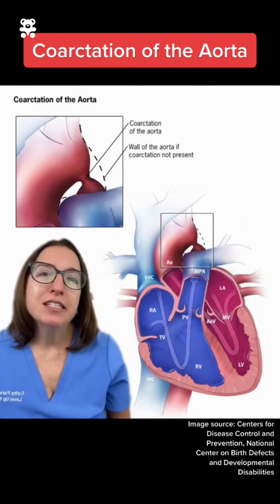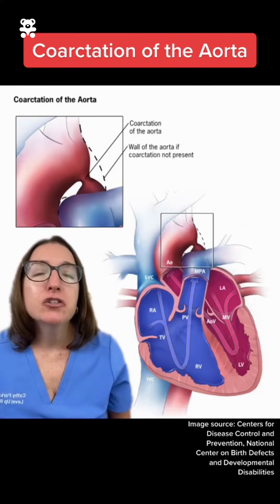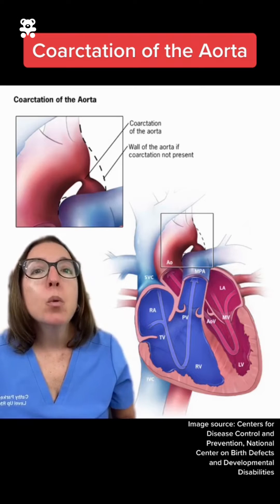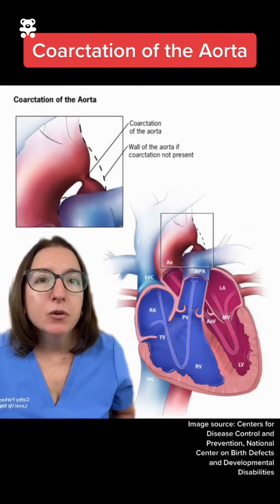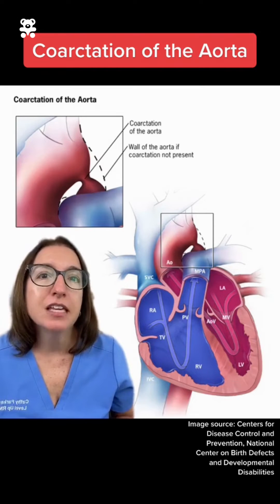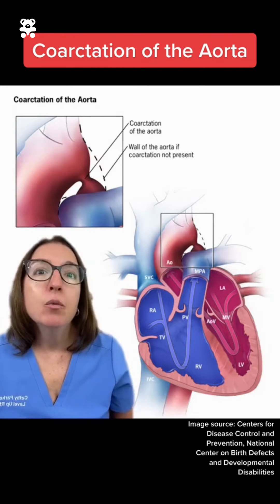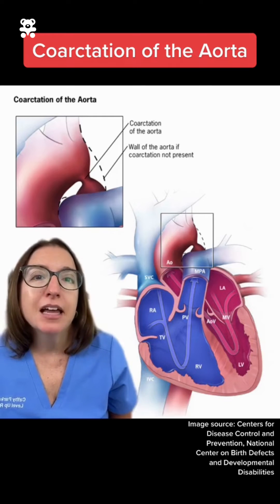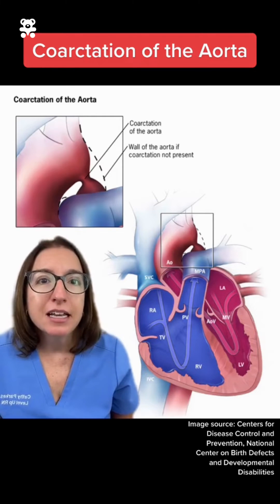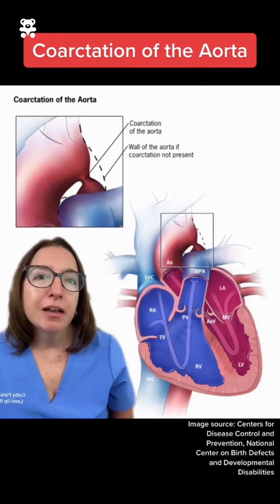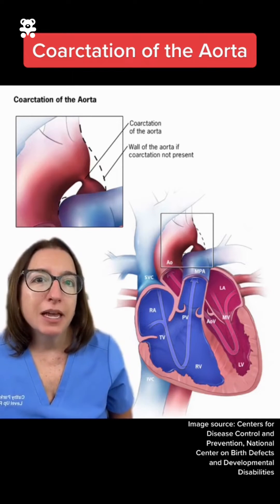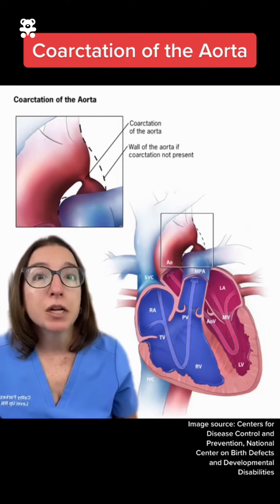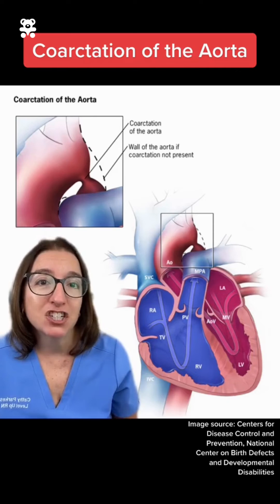Treatment of COA includes surgery to open up that narrowed section of the aorta with a balloon angioplasty and/or stents. In addition, hypertension is managed with blood pressure medications.